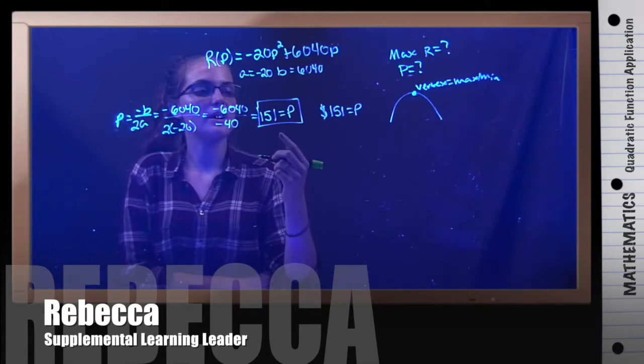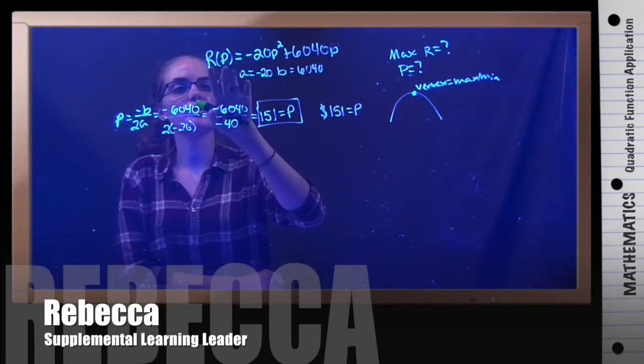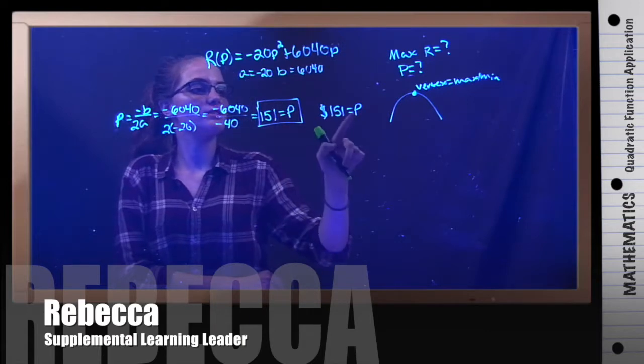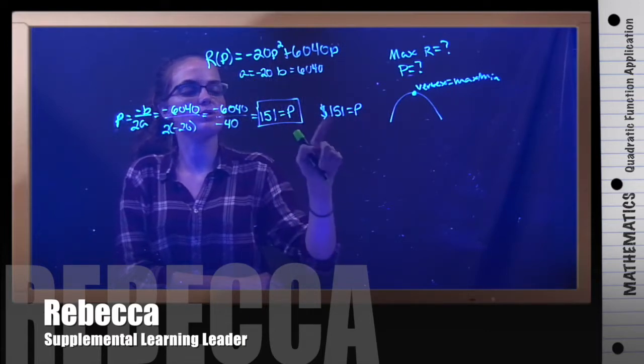Now how do we find the maximum revenue? We know the price, but how do we get the revenue? We have a revenue equation right here. If we know our price is 151, we can just substitute p for 151.